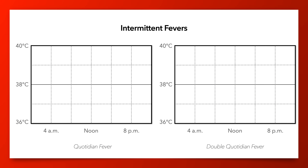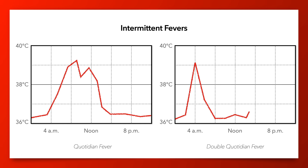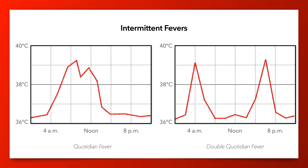There are a couple subtypes of the intermittent fever. A cotidian fever occurs once a day, such as with malaria caused by the parasite Plasmodium nolesi. A fever that spikes twice daily is referred to as a double cotidian or biphasic fever. It may be seen with systemic onset juvenile idiopathic arthritis and some drug fevers, such as those caused by carbamazepine.